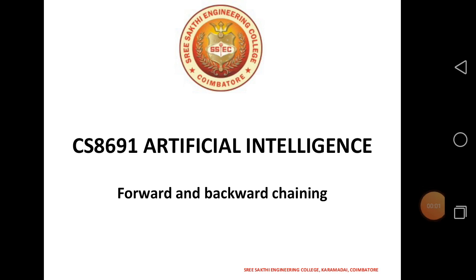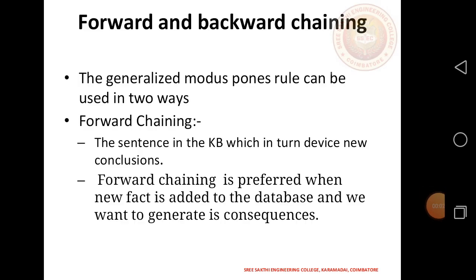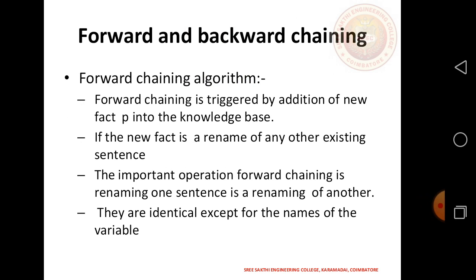Forward Chaining and Backward Chaining. The generalized rule can be used two ways. Forward Chaining uses sentences in a knowledge base which are true to derive new conclusions. It is perfect when a new fact is added to the database and you want to generate the consequences.